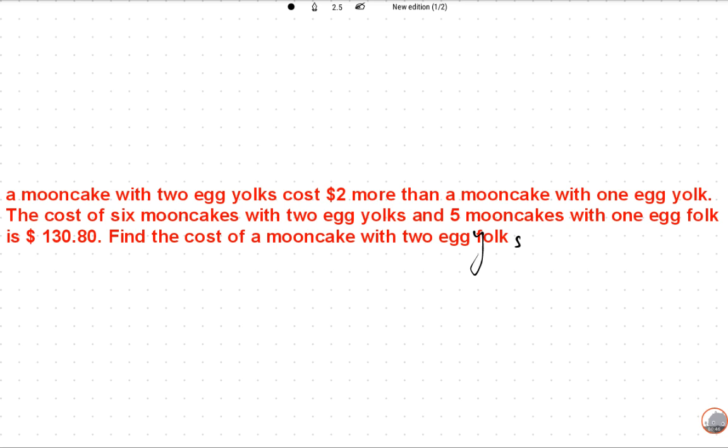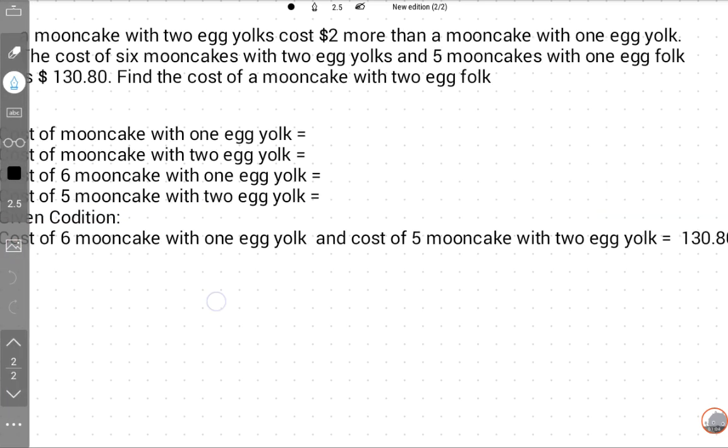First, we will suppose variables like mooncake with one egg yolk and two egg yolks. We will suppose one egg yolk is X. The price of one egg yolk mooncake is X.